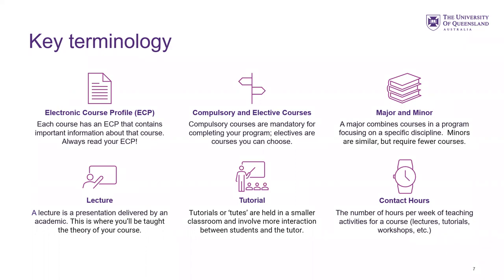You might have some compulsory and elective courses. Compulsory courses are the mandatory ones that you have to do — if you don't complete them, you cannot finish your program. Electives are additional courses that you can choose to make up your program. You may also have a major and a minor. A major combines courses in a program focusing on a specific discipline, with some compulsory and some elective components. A minor is similar, but with fewer courses.